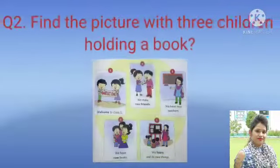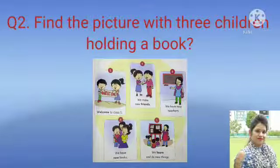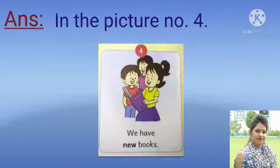Okay, now your second question is: Find the picture with 3 children holding a book. Now look again at all these pictures and tell me in which picture 3 children are holding a book. Yes, well done! Very good — in picture number 4. So your answer is in picture number 4.